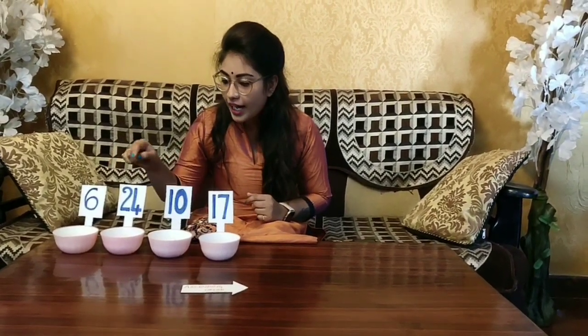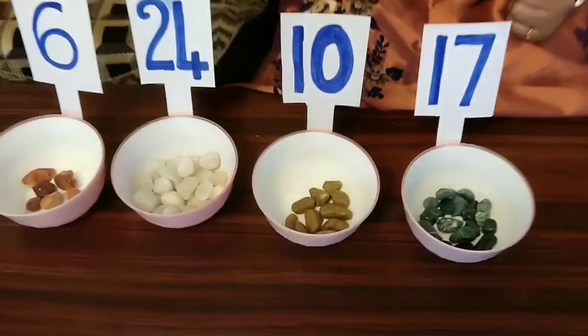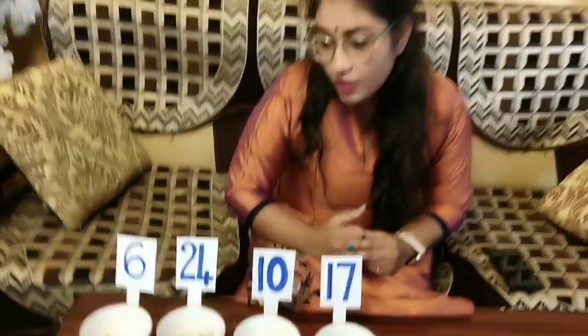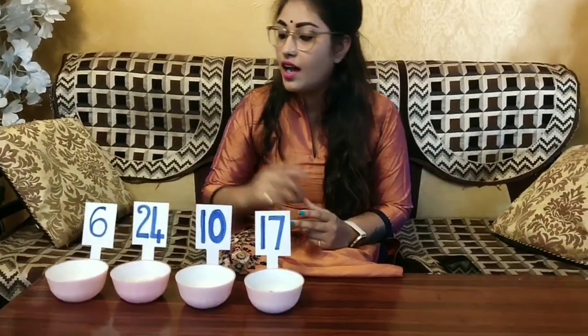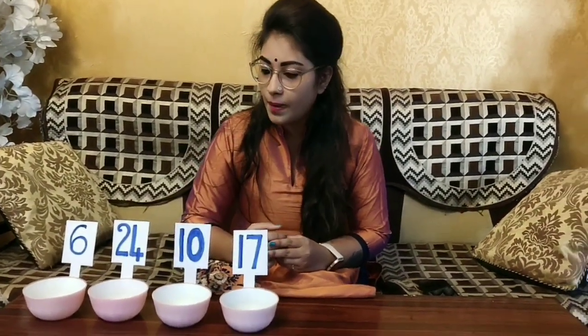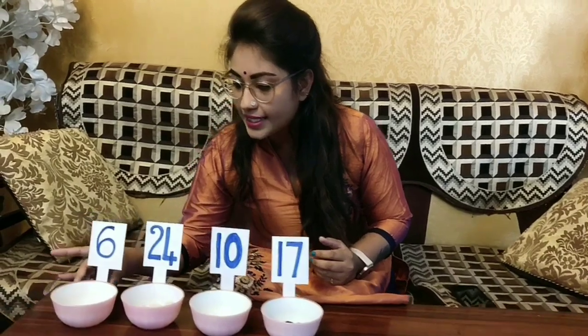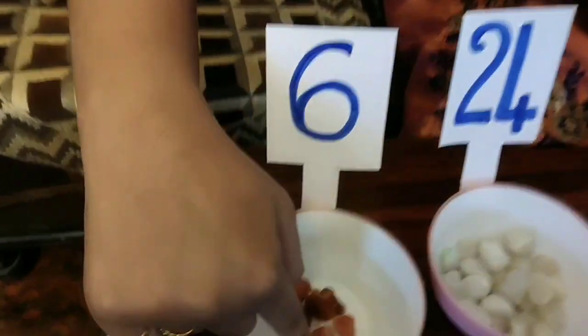Before doing this activity, we need to understand what ascending order means. Ascending order means arranging the quantities or numbers from the smaller number to the bigger number. So today I have some numbers here. Along with these numbers, I have some stones. Using this material, I will show you how to count and arrange it.